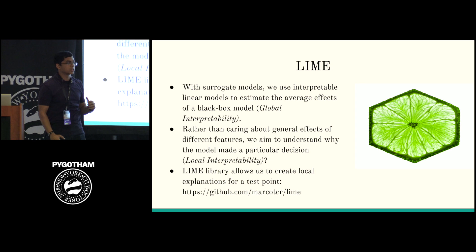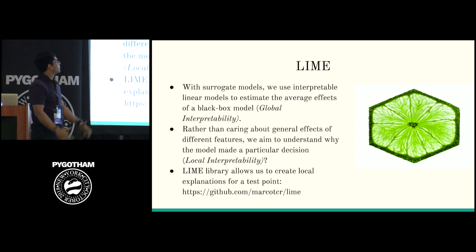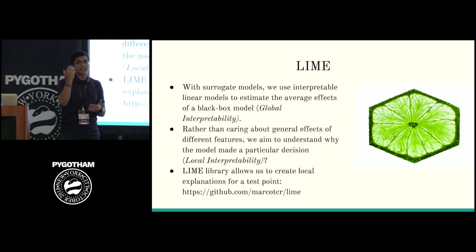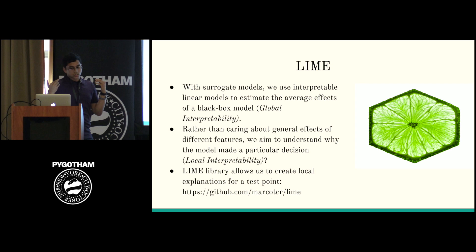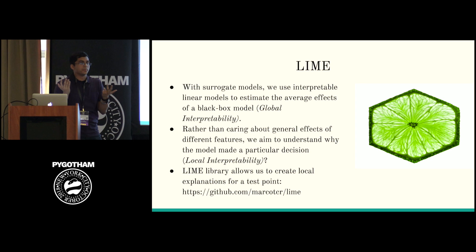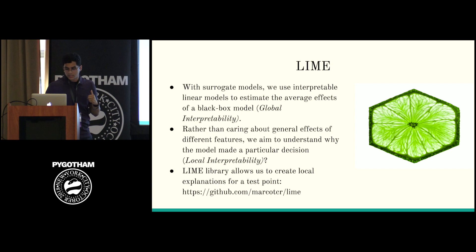Rather than caring about the global average effect of all features, we probably only care about why the model came to a particular decision — like why did it deny that one person a loan? This is local interpretability: interpretability for a specific data point. This is sort of what LIME allows us to address. LIME allows us to create an explanation for a single point for pretty much any model — random forest, neural networks, or other black box models.